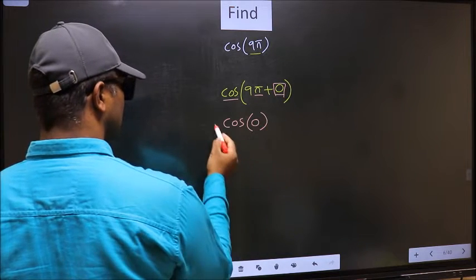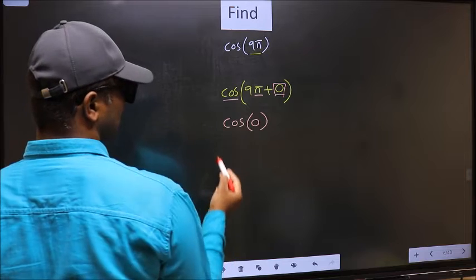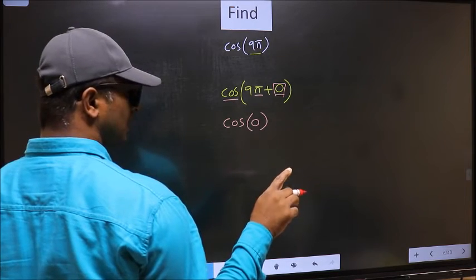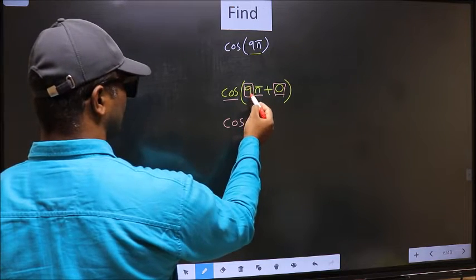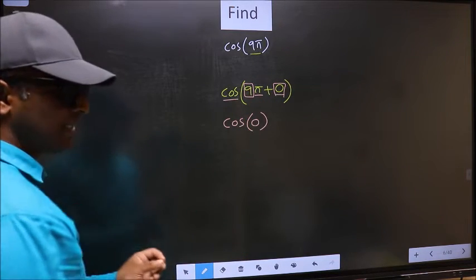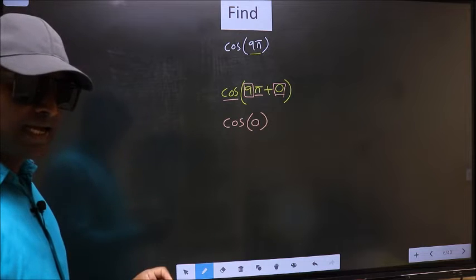Now the question is, will we get here plus or minus? To answer that, you should look at the number before π, which is 9. 9 is odd, and all the odd multiples of π